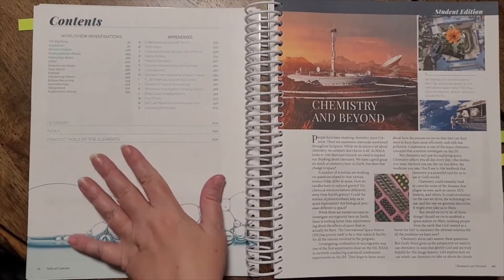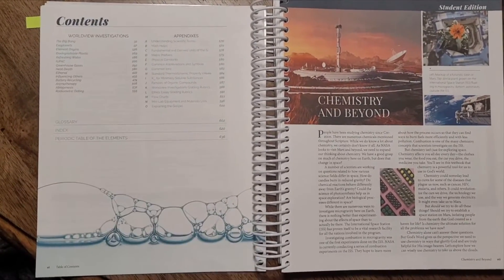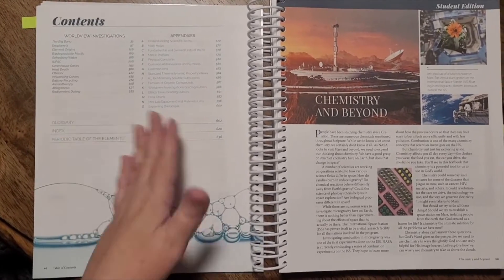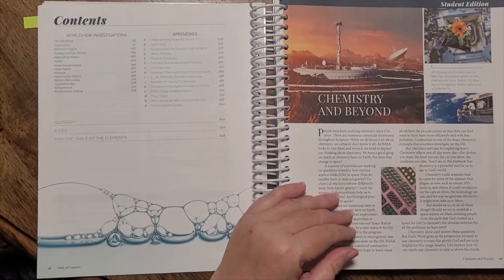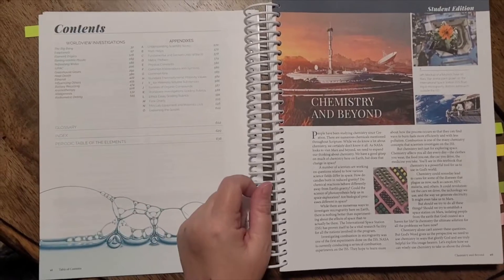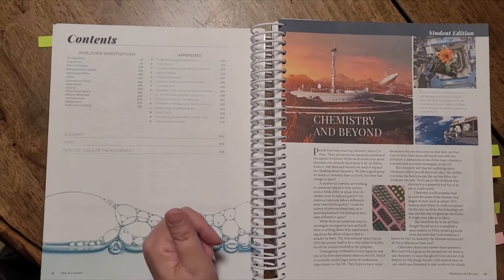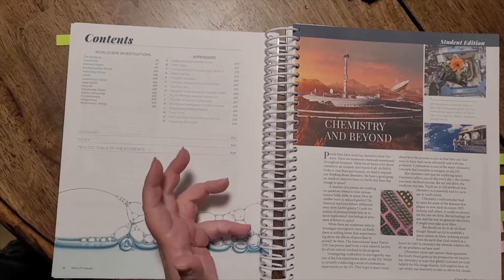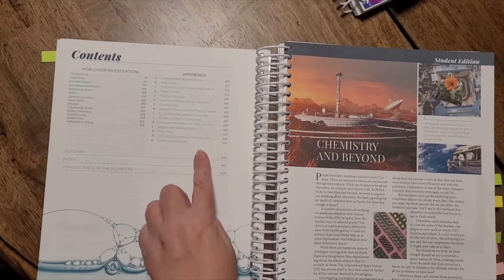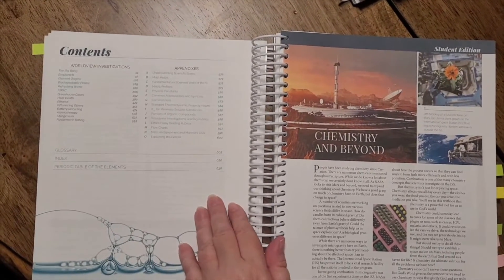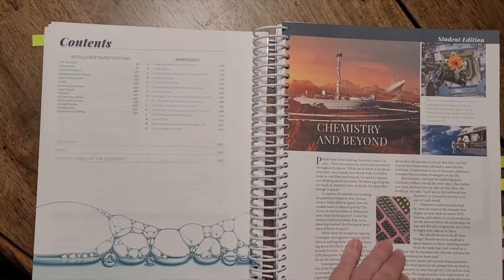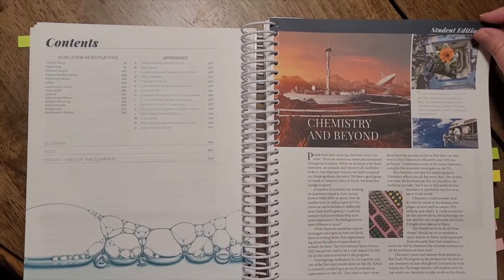Then you'll notice that there are some other investigations, worldview, the different types of worldview that you can see out there and how they are related to the Bible. And then the appendixes along with the glossary index and periodic table. We'll look at those in a little bit.